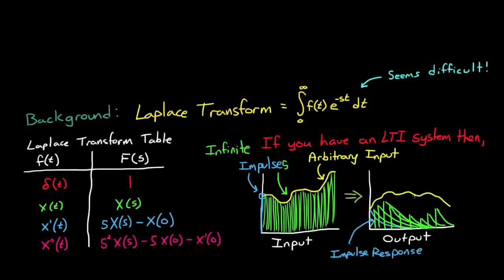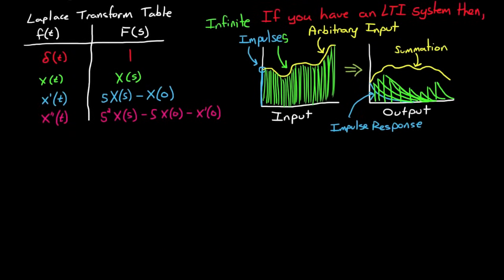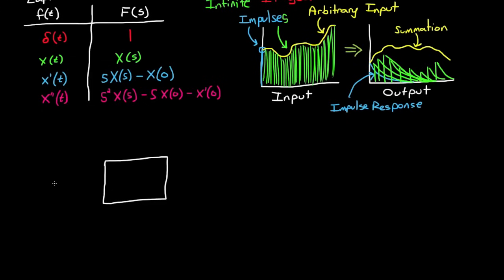Now, finding the system time domain response to the arbitrary input is as simple as summing up all of the infinite impulse responses. And since summing an infinite number of signals is impossible to do at one time, mathematicians came up with what is called the convolution integral.